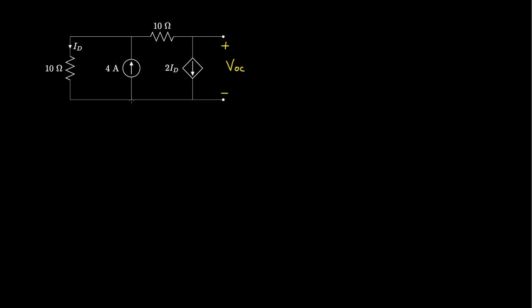I'll begin by setting this as my reference or ground node and calling this node VA. If I can solve for VA, I'll solve for the open circuit voltage as VA minus the voltage drop across this resistor. In terms of the unknown node voltage VA, the current ID through this 10-ohm resistor is going to be VA over 10. That means the current through the dependent current source is twice VA over 10.